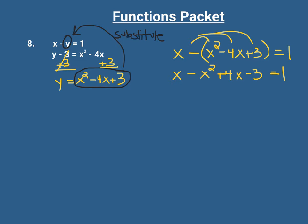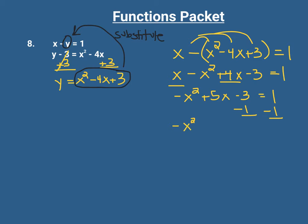Combining like terms, we'll have negative x squared plus 5x minus 3 equals 1. I don't like a negative leading coefficient, so we can subtract 1 from both sides, leaving us with negative x squared plus 5x minus 4 equals 0.